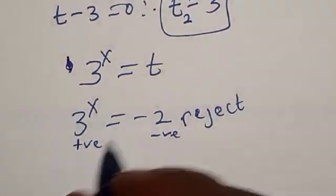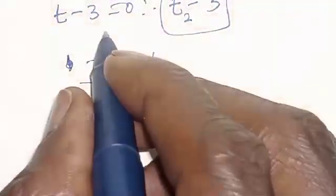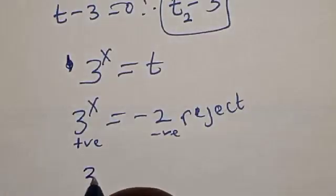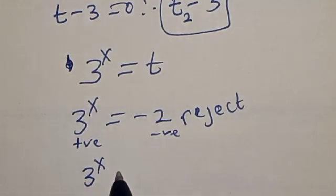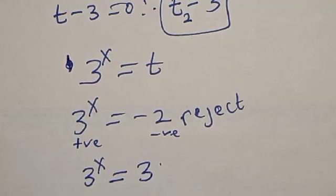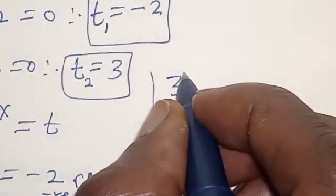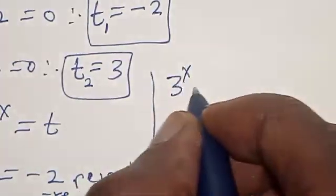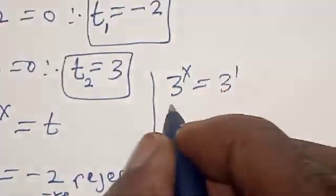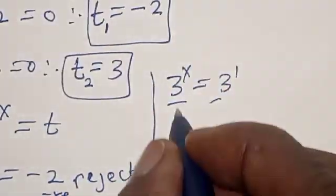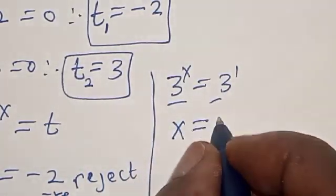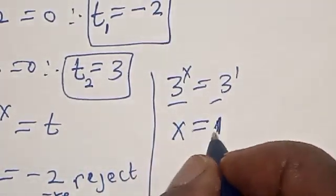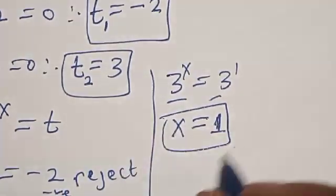Now let's check the other solution. 3 raised to power x equals 3, which means 3 raised to power x equals 3 raised to power 1. They have the same base, so x equals 1. That is the value of x.